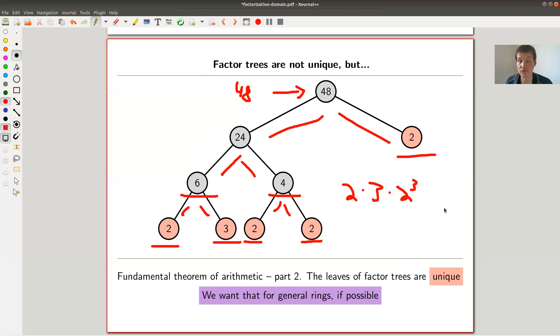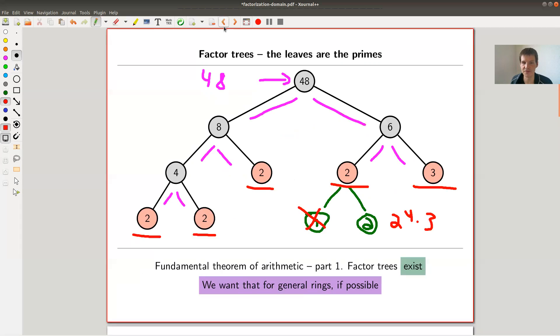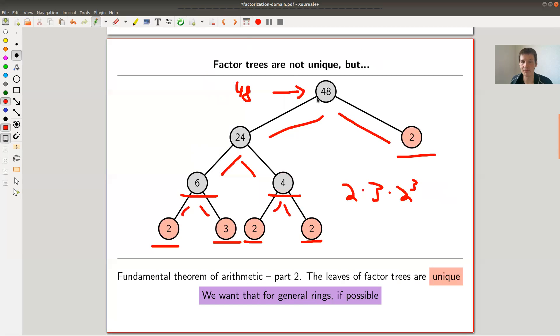And the fundamental theorem of arithmetic tells us that factorization trees are not unique. They can't be. I just showed you two different trees of the same example. But kind of their leaves are unique. So you'll always see the same number of primes when you factor a prime. And it's this uniqueness statement of the fundamental theorem of arithmetic.